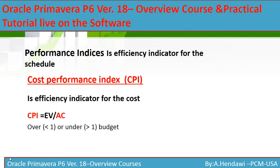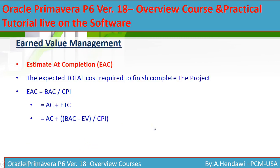The Cost Performance Index (CPI) is an efficiency indicator for cost — anything with a C means cost. CPI equals Earned Value over Actual Cost. If it is less than one you are over budget; if more than one you are under budget.